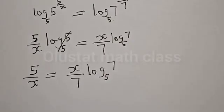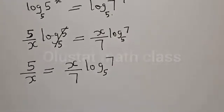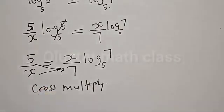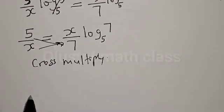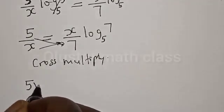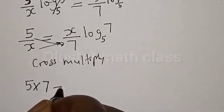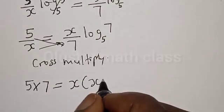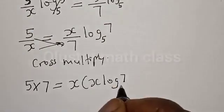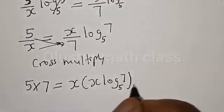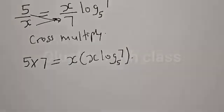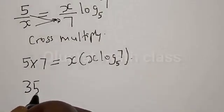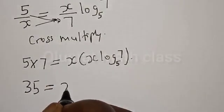Now let's cross multiply — this one will go for this and this one will go for this. We have 5 multiplied by 7 is equal to x times x times log 7 base 5. Then 5 times 7 is 35, so we have 35 is equal to x squared times log 7 base 5.